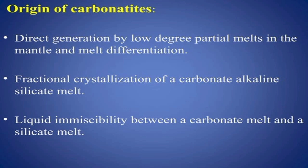Regarding origin, carbonate-rich magmas are actually rare on Earth. After many experiments, scientists have concluded that there are mostly three ways in which carbonatites may have formed: first, direct generation by low-degree partial melting in the mantle; second, fractional crystallization of carbonated alkaline silicate melt; and third, liquid immiscibility between a carbonate melt and a silicate melt.